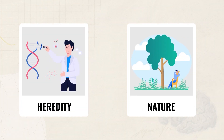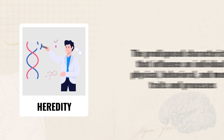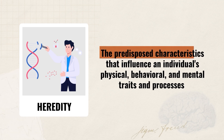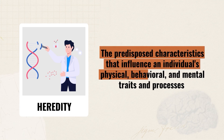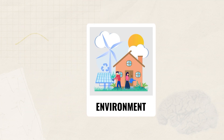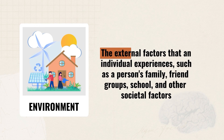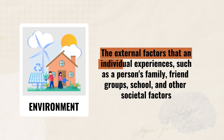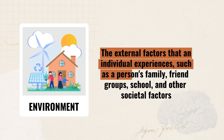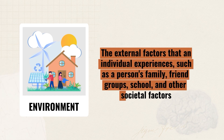When you hear the term heredity, think of nature. This is genetics — the predisposed characteristics that influence an individual's physical, behavioral, and mental traits and processes. And when you think of environment, think of nurture. This is the external factors that an individual experiences, such as a person's family, their friends, school, and other societal factors.